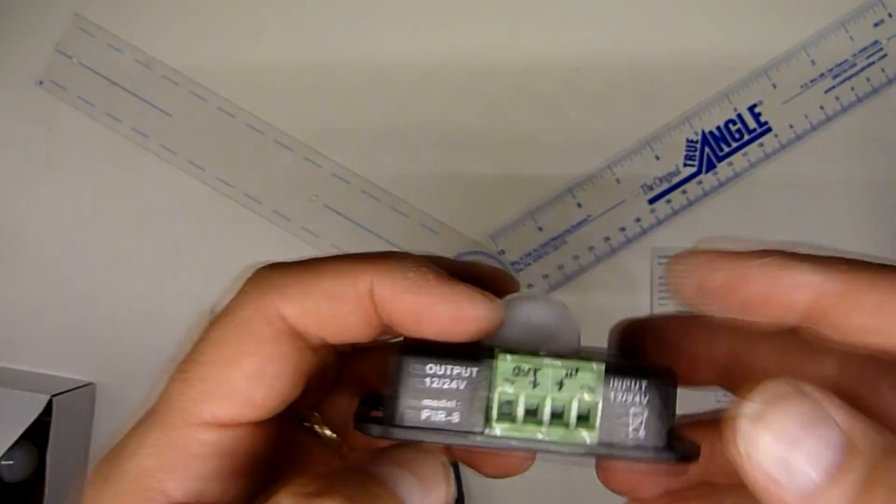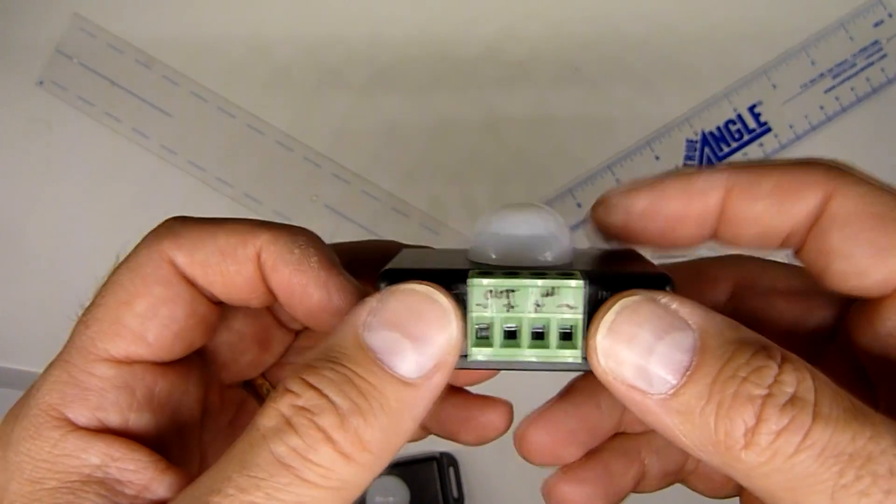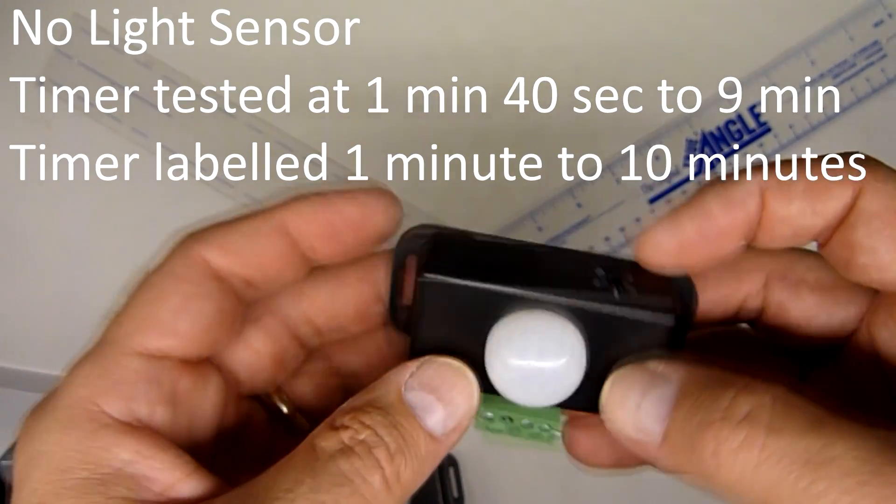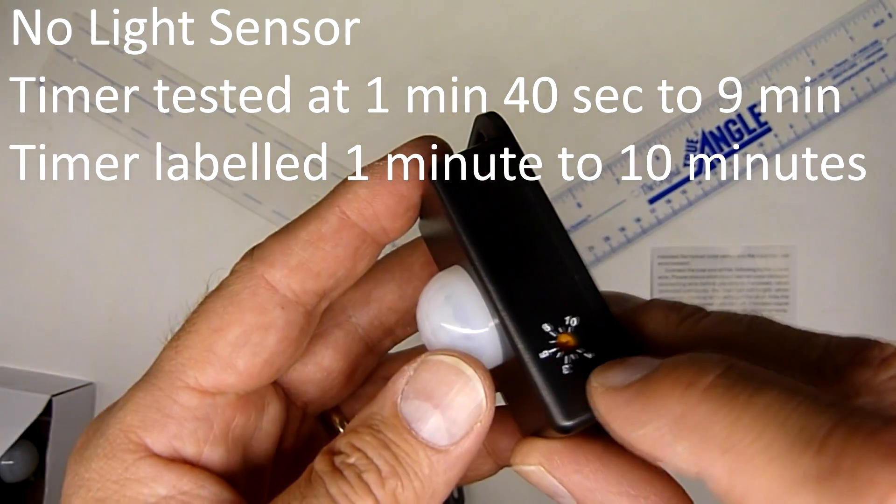The unit only comes in brown. It does not have a light sensor.